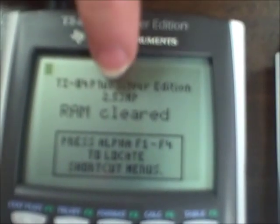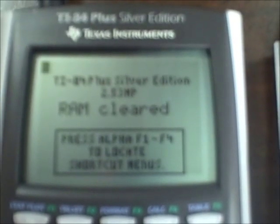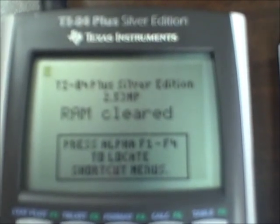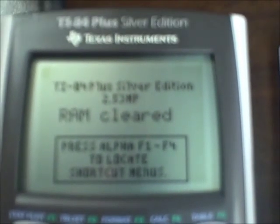And on the new one, it says TI plus silver edition, 2.53 math print, RAM cleared, press alpha, F1 to F4 to locate the shortcut menus. That's the update. So this is how you know this one's updated.